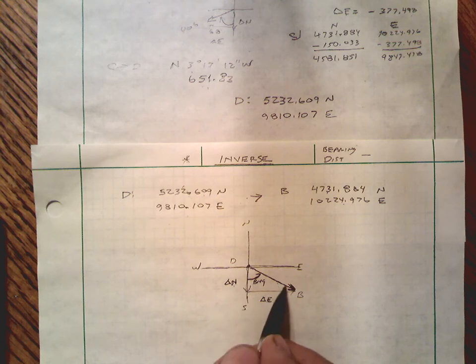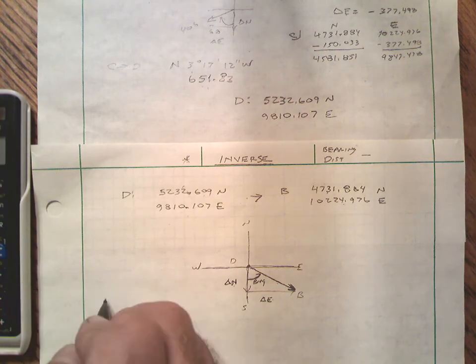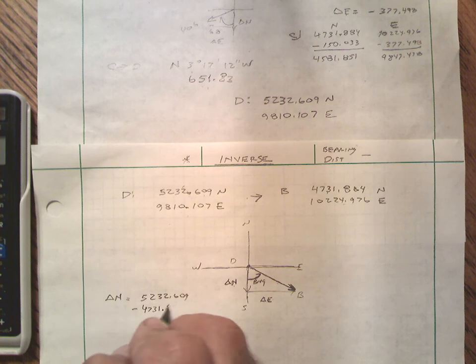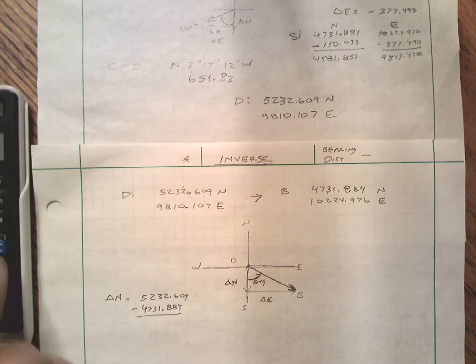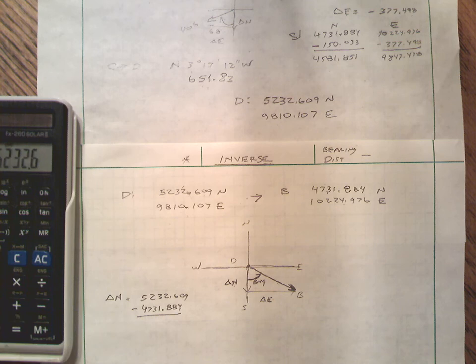So let's go ahead and do that. The change in north is going to be 5232.609 minus 4731.884. Well, let me hit the right buttons: 5232.609 minus 4731.884.